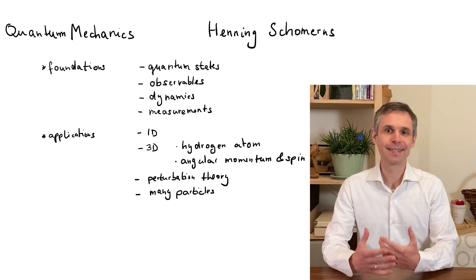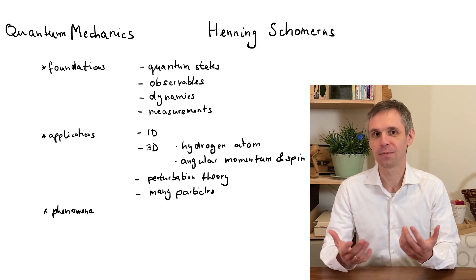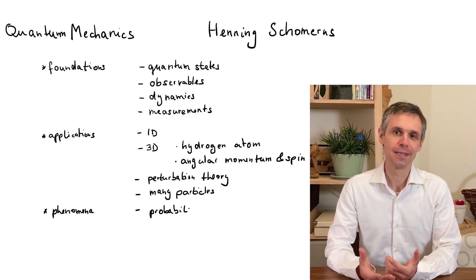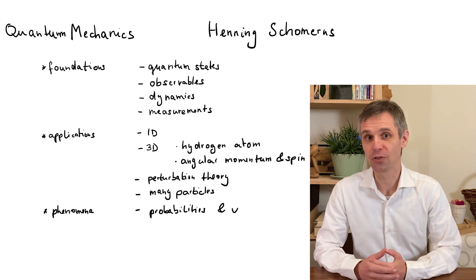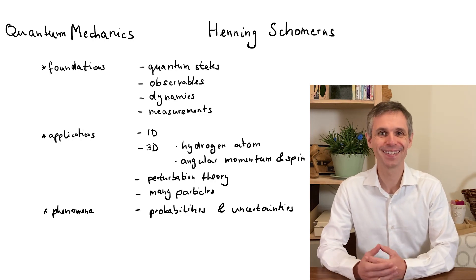Thirdly, on this way we will encounter a range of quantum phenomena, such as the fact that for quantum systems we generally deal with probabilities, which result in uncertainties of observables, that also tell us how different observables are related to each other.